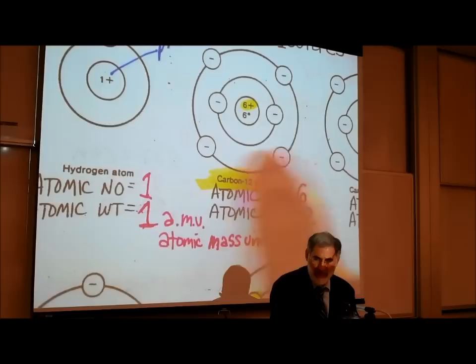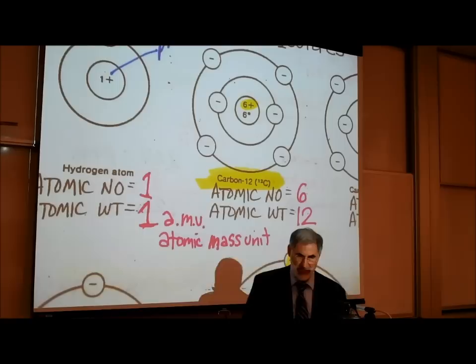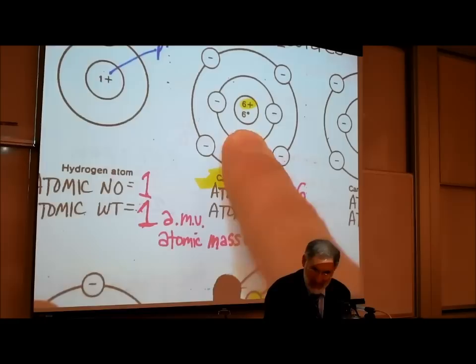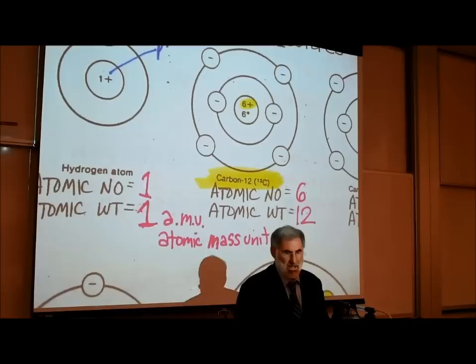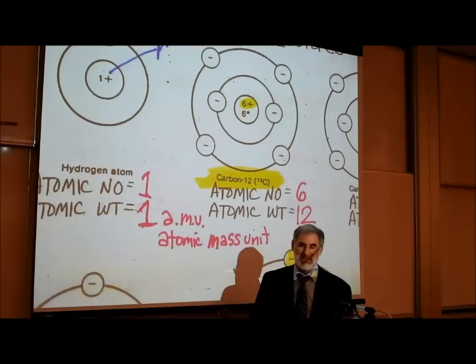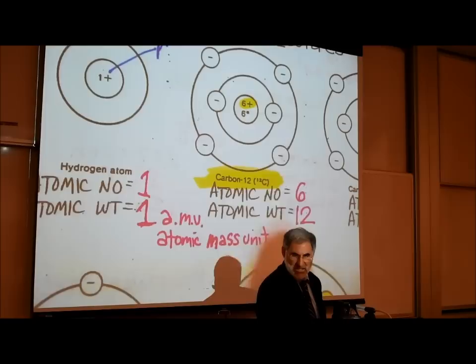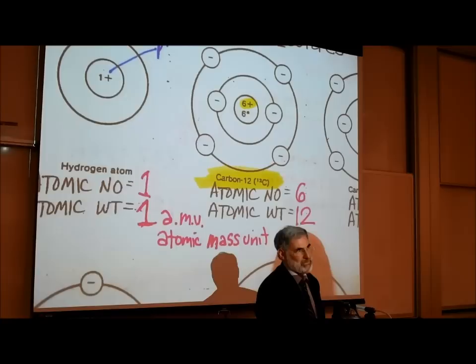We have the same number of negative charged electrons as positive charged protons — six and six. This carbon atom happens to have six neutrons, indicated by the neutral symbol. The atomic weight is determined by the number of protons plus the number of neutrons. Since it has six protons and six neutrons, it weighs a total of 12 — technically 12 AMUs, or 12 atomic mass units.